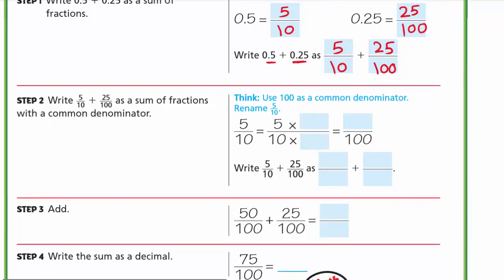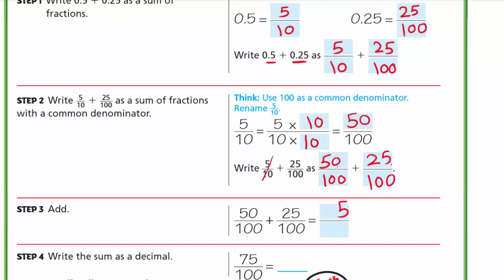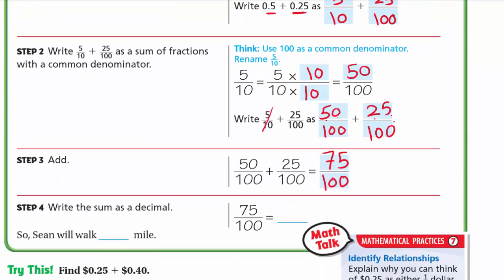We'll use a common denominator. I'll make the 10 into 100 by multiplying by 10 up and down: 5 times 10 is 50, so 5 tenths becomes 50 hundredths. Now I add 50 hundredths plus 25 hundredths: 50 plus 25 equals 75, so the answer is 75 hundredths. Written as a decimal with no whole number, that is 0.75. Sean will walk 75 hundredths of a mile.